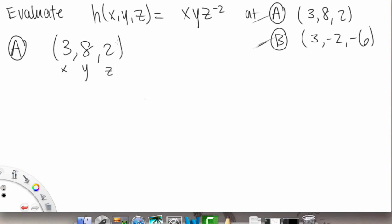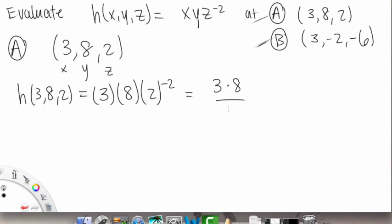We're basically just going to plug this in for our given function. So we have h of 3, 8, 2 is now going to be equal to 3 for x, and then an 8 for the y spot, and a 2 for the z spot. So this is going to be 3 times 8 over 2 squared, which is equal to 3 times 8 over 4. And then we can reduce that, so 3 times 2.